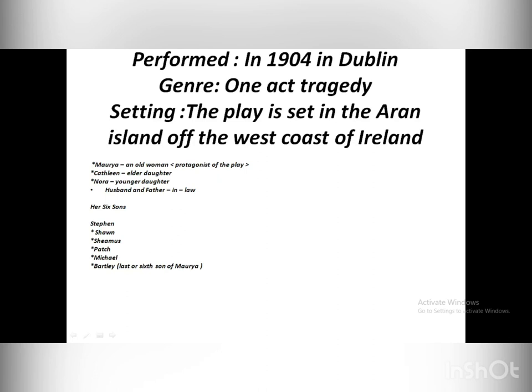The main characters are: Maurya, an old widow and the protagonist of the play; her two daughters, Kathleen, the elder, and Nora, the younger. She also had a husband and father-in-law, and six sons — Stephen, Sean, Shamus, Patch, Michael, and Bartley. Bartley is Maurya's last remaining son, who was also killed by drowning.